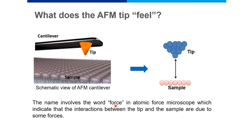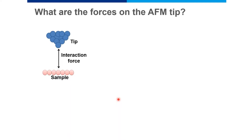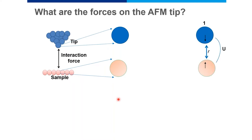We now need to understand exactly what these forces are between the AFM tip and the sample surface. To explore this, let's take one tip atom and one sample atom. Suppose these two atoms are initially very far away from each other. We are going to slowly bring the tip atom close to the sample atom and observe what happens.